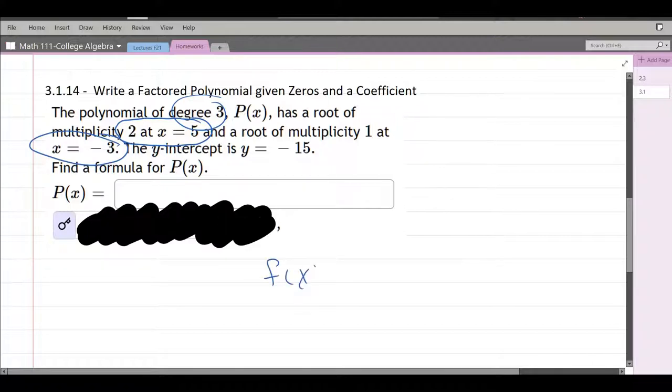So let's just write down what our polynomial is going to look like. It has a leading coefficient. Now this is degree 3. And what's happening here, there is a multiplicity 2 at x equals 5.